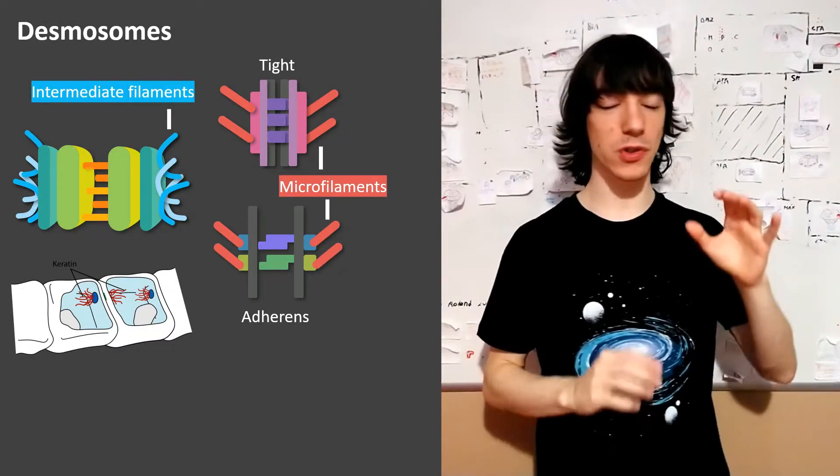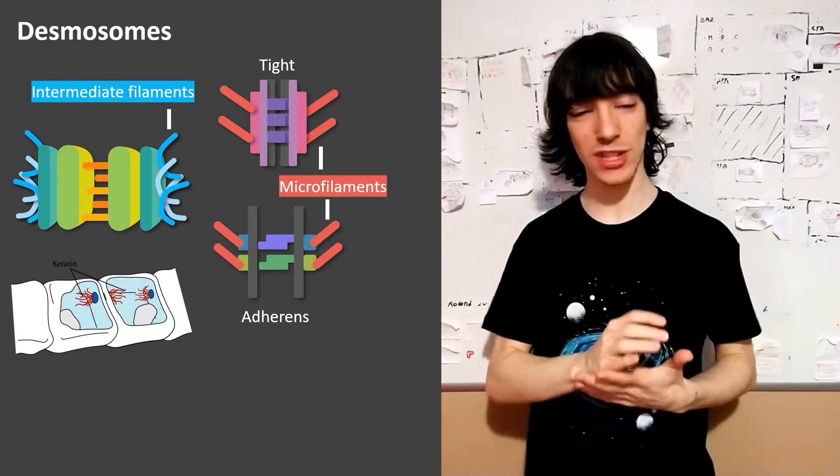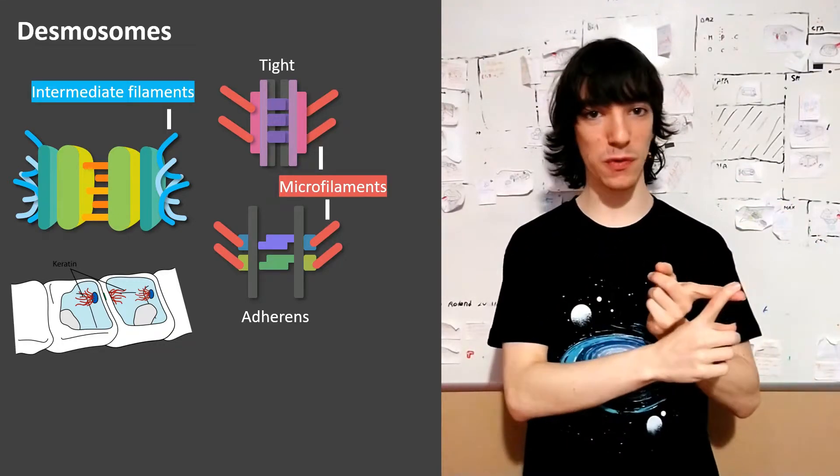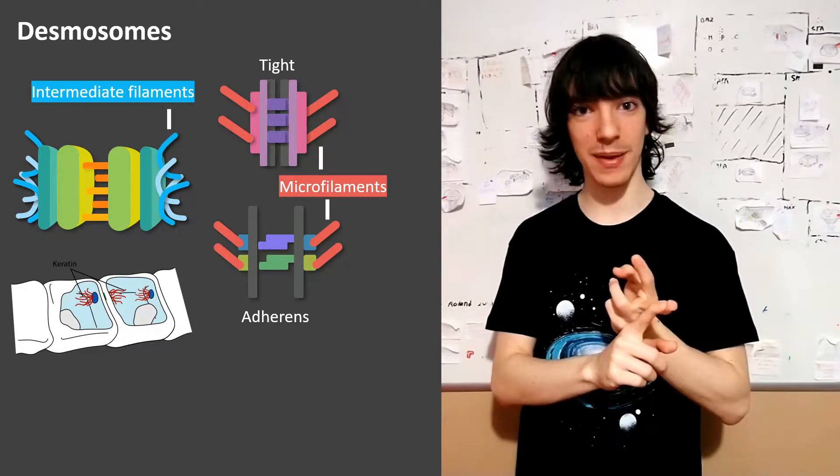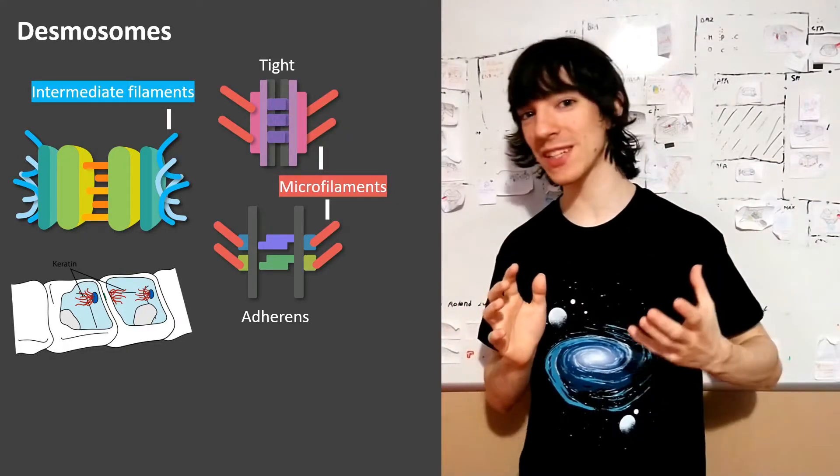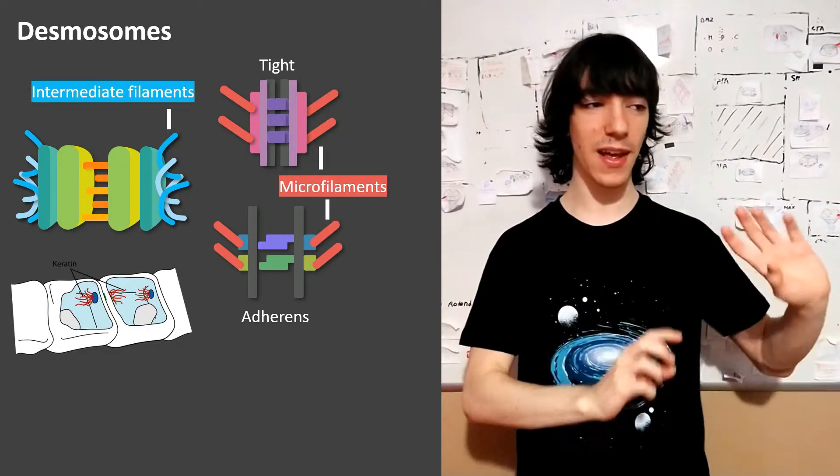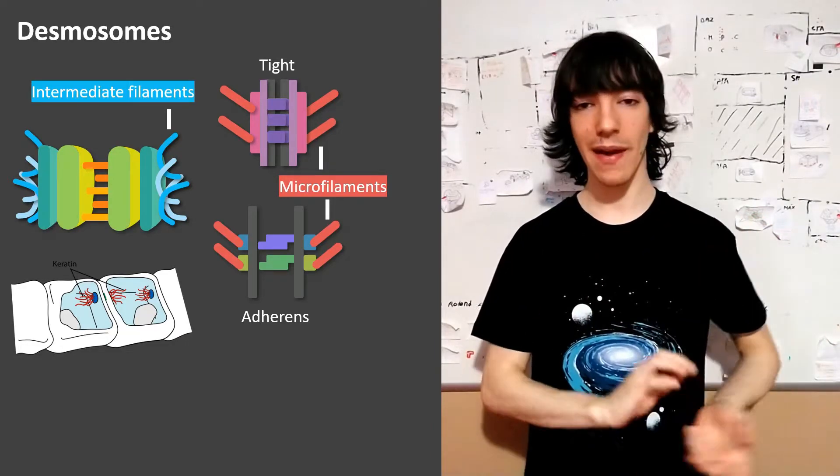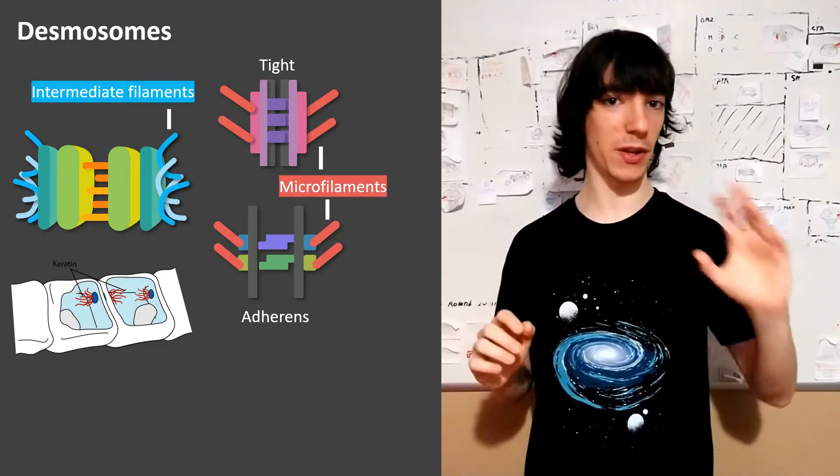And this is important because of all the filaments in the cytoskeleton, like actin microfilaments, intermediate filaments which are made of other proteins like keratin or vimentin depending on the cell type, and microtubules made of tubulin.